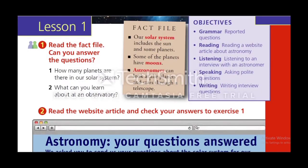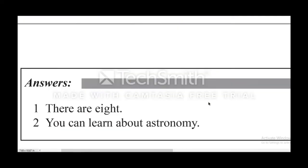Now let's go back to the questions. How many planets are there in our solar system? What can you learn about at an observatory? Here are the answers: there are eight planets, and you can learn about astronomy at an observatory.